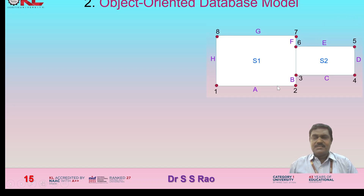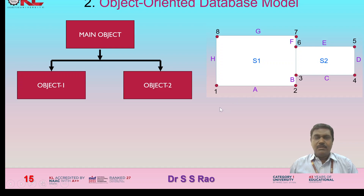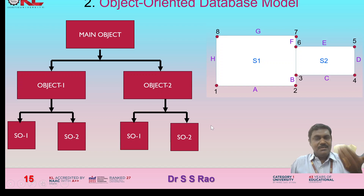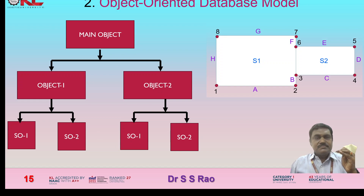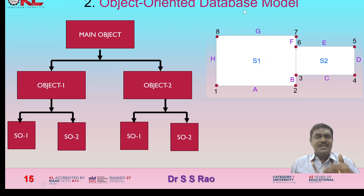The second model is the object-oriented database model. Here the entire diagram is divided into several objects. The main object is divided into two sub-objects — object one and object two. Object one contains surfaces S01 and S02; object two also contains S01 and S02. Each main object is divided into sub-objects, and sub-objects can be further divided as required. This type of structure is called the object-oriented database model.